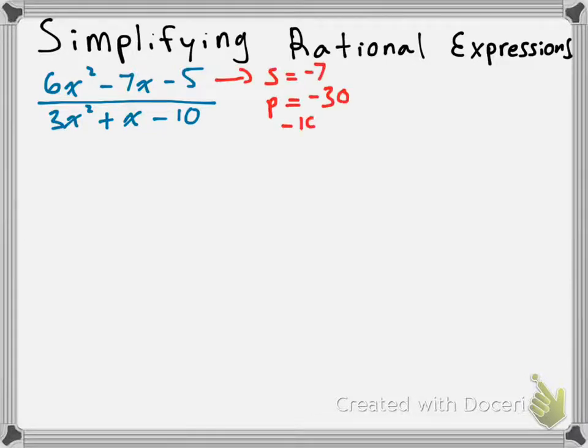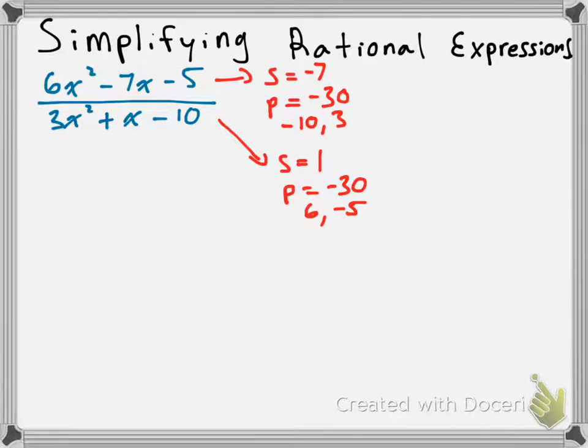For the top, we get a sum of negative 7 and a product of negative 30, so two numbers that multiply to give us negative 30 and add to give us negative 7 are negative 10 and 3. For the bottom, we get a sum of 1 and a product of negative 30. Two numbers that add to give us 1 and multiply to give us negative 30 are 6 and negative 5.